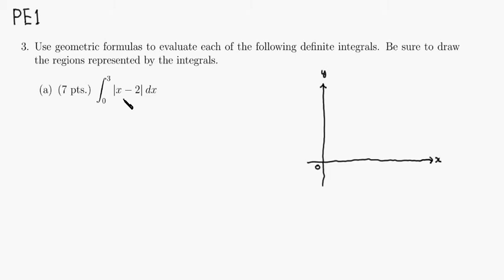First thing I would do is draw the graph of x minus 2, then apply the absolute value sign. So x minus 2 is just a straight line with slope 1 and y-intercept negative 2.